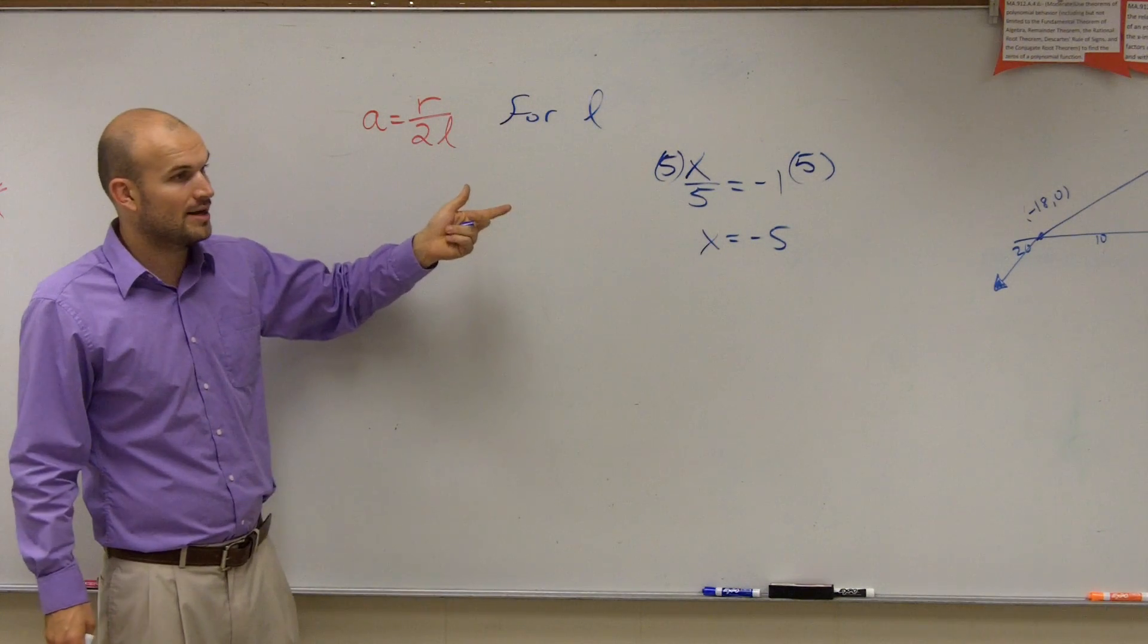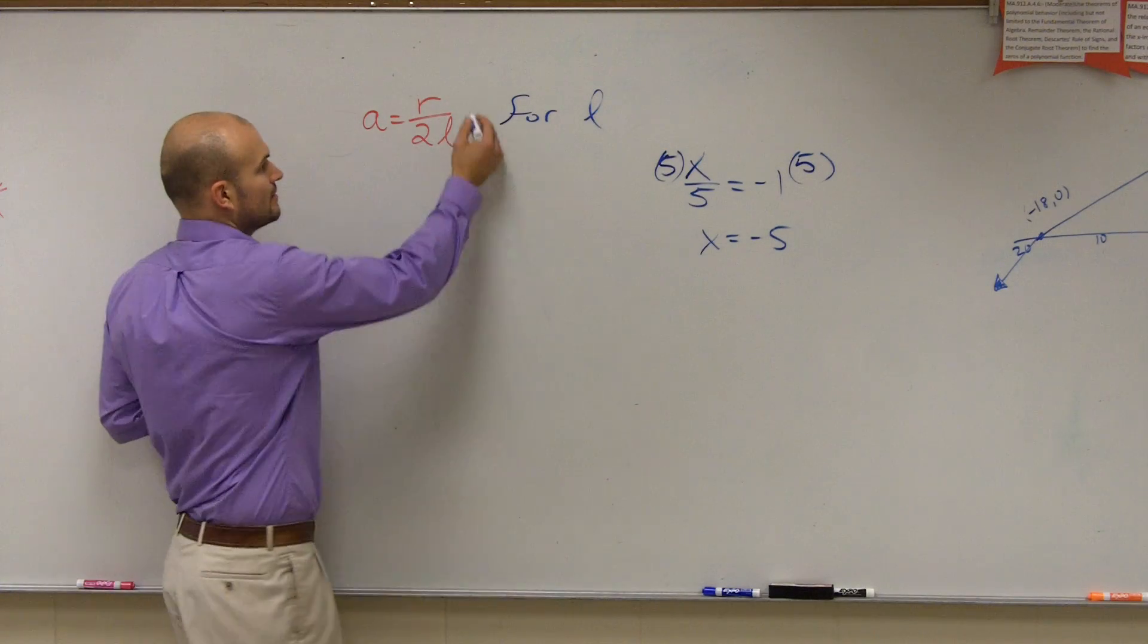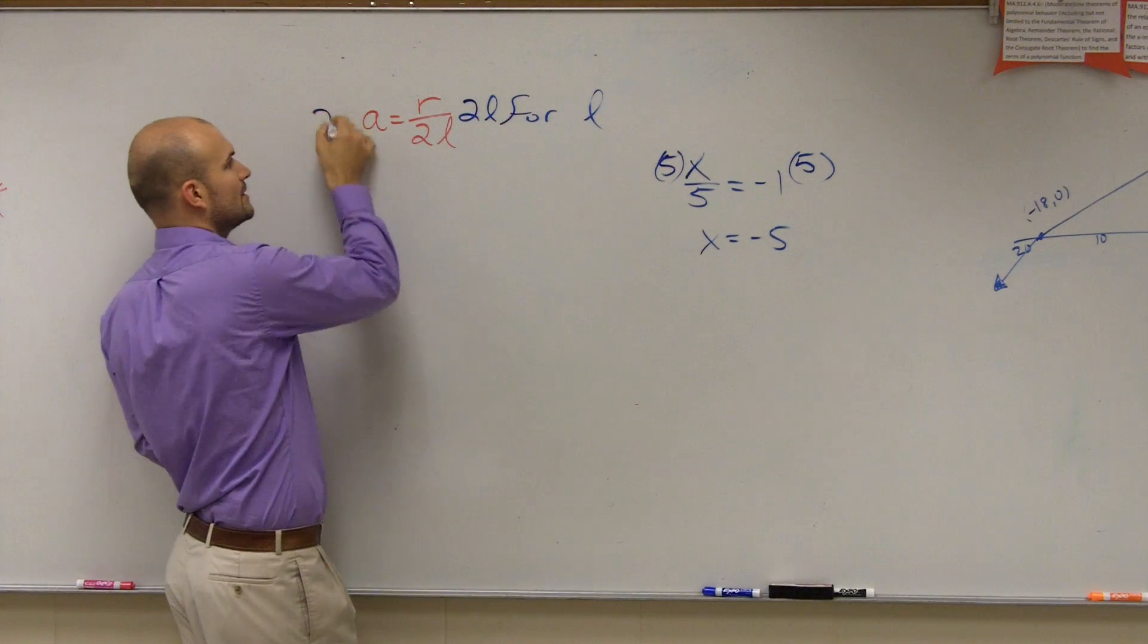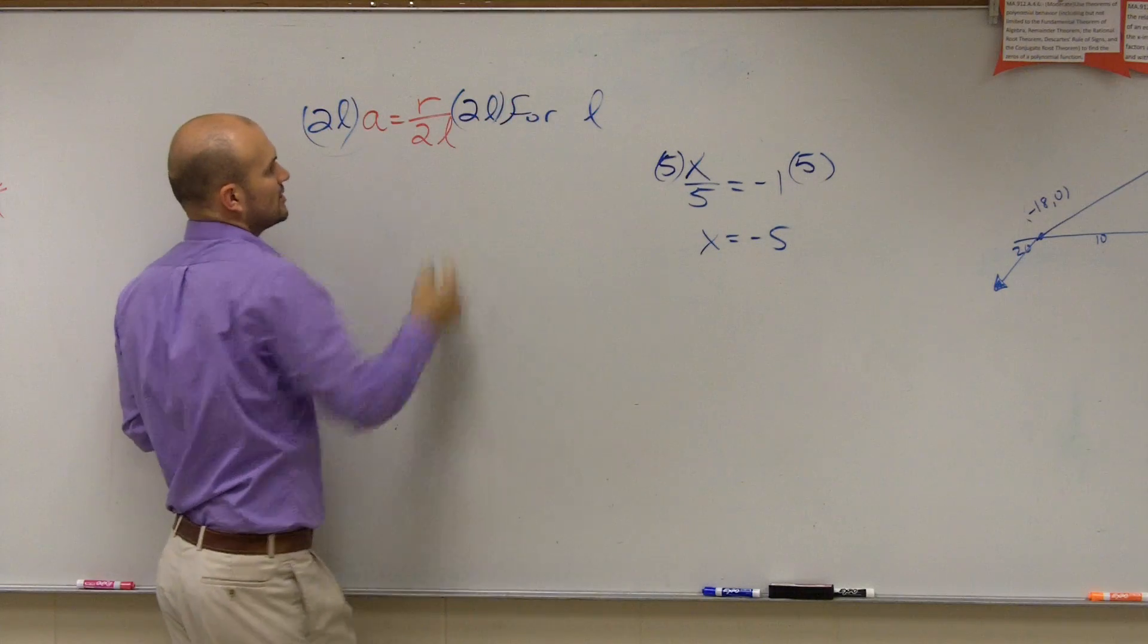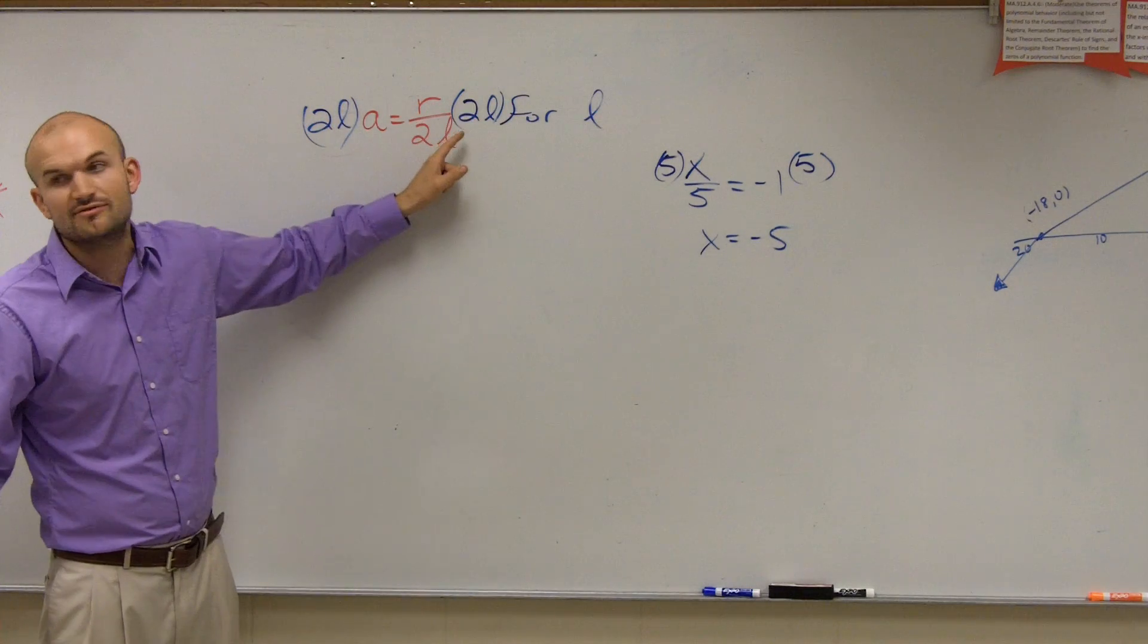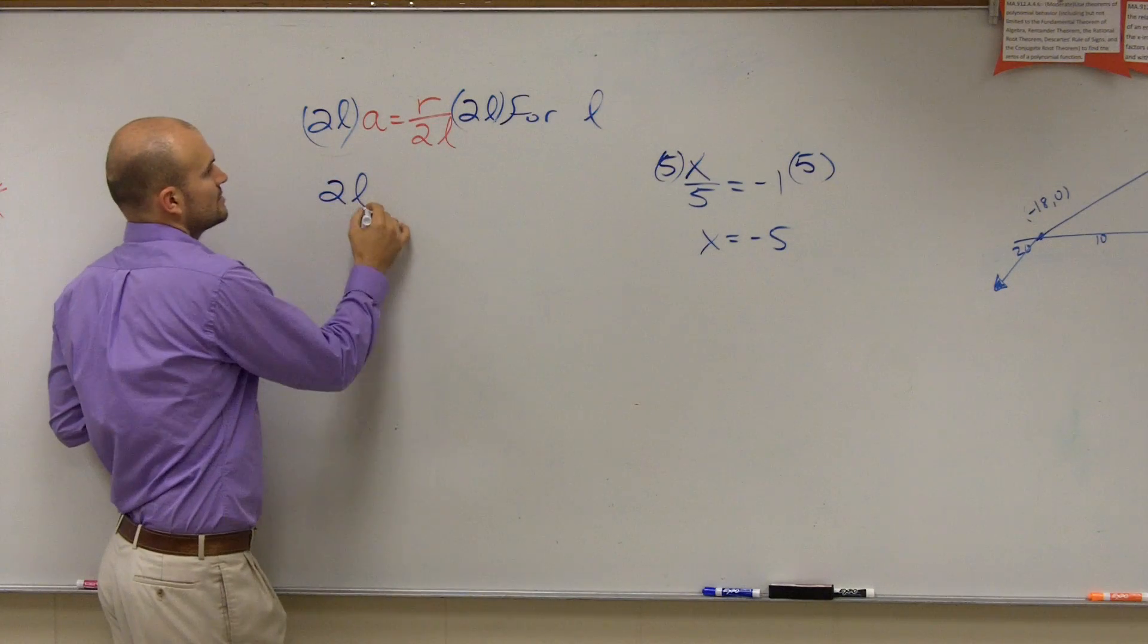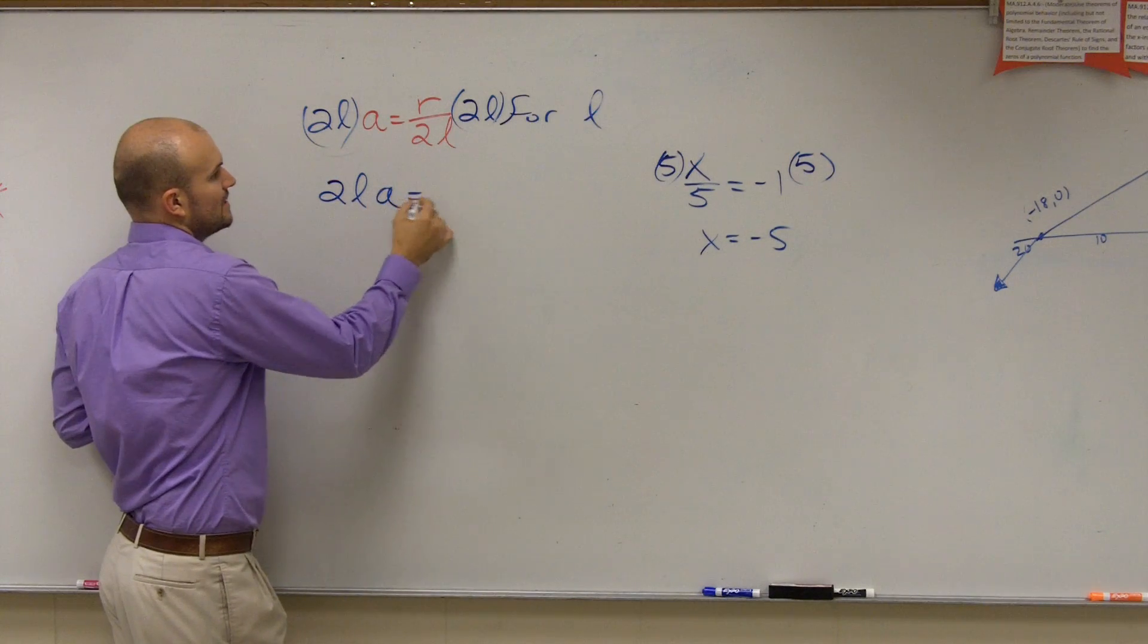So how do we get this off of the denominator? Multiply it. And what do you think we're going to have to multiply it by? 2L. You could just multiply it by L, but then you're going to leave 2 in the bottom. You don't want to leave 2 by itself. So we multiply it across. Now, these are going to divide into 1. 1 times R is R. So now I have 2L times A equals R.